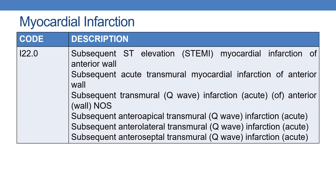Now coming to I22.0 — subsequent ST elevation myocardial infarction of anterior wall. Synonymous terms include: subsequent acute transmural myocardial infarction of anterior wall, subsequent transmural infarction of anterior wall NOS, subsequent anteroapical transmural infarction, subsequent anterolateral transmural infarction, and subsequent anteroseptal transmural infarction. For any of these terms, code I22.0.